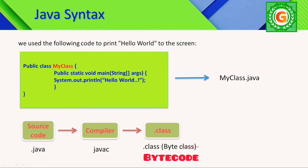We write a name for the class. The class name should have a capital first letter. When you save the file after writing the Java program, you save using the class name with the .java extension. For example, my class name is MyClass, so I save it as MyClass.java. The class name and the file name must match. If you write the source code, the compiler will generate the .class file containing bytecode, which is a binary coding language.